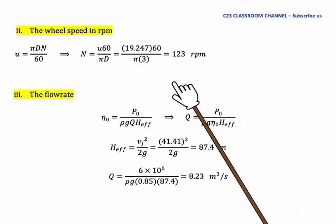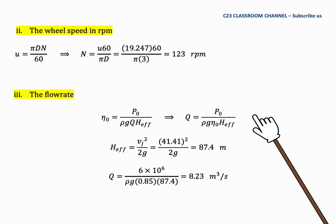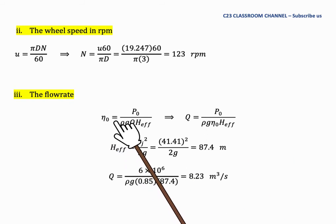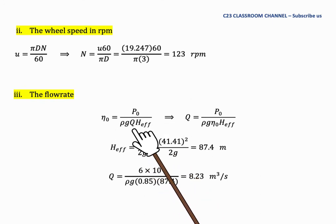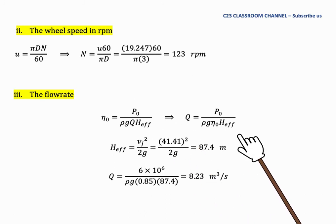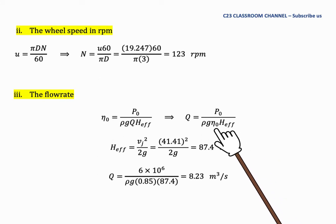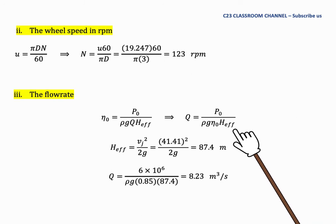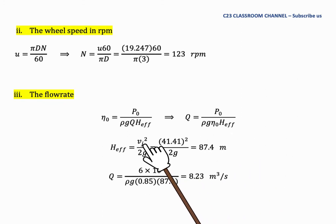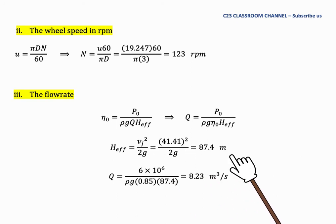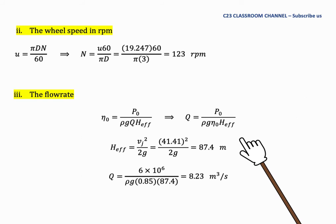Next, we calculate the flow rate. Overall efficiency equals power out divided by rho G Q times effective head. Rearranging, flow rate Q equals power out divided by rho G times overall efficiency times effective head. To find the effective head, we use V squared over 2g with the velocity of jet, giving an effective height of 87.4 meters. Substituting all values, we get flow rate Q equal to 8.23 cubic meters per second.